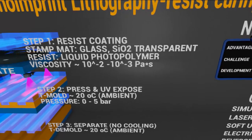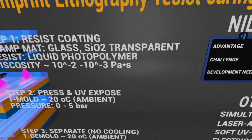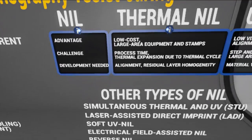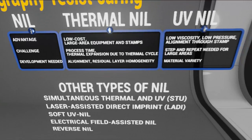Now we will see a comparison of the two processes. There are other types of NIL: simultaneous thermal and UV, laser assisted direct imprint, soft UV NIL, electrical field assisted NIL, and reverse NIL.